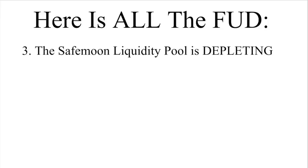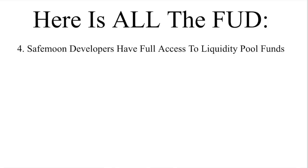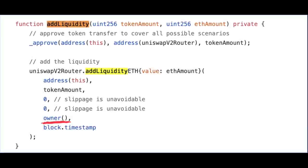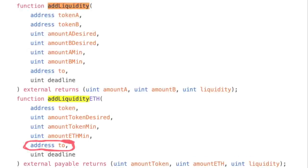Number three: I basically proved this in point two, but the liquidity pool is not depleting — only increasing. However, the burning of tokens will eventually catch up and reduce the supply in the liquidity pool over time, but this is not a bad thing by any means. Number four: when swap and liquefy is called, pay attention to this line of the code. If we check the interface, this line is the 'to' address — implying this is where the liquidity tokens go once this function executes.